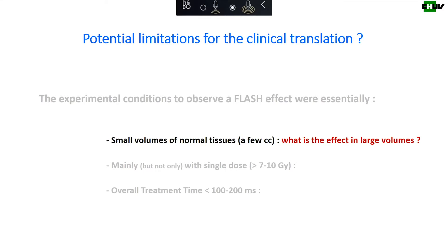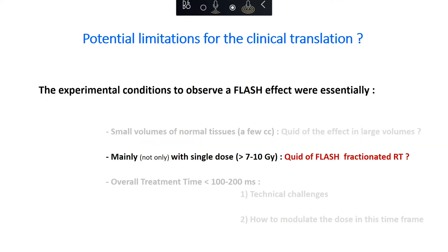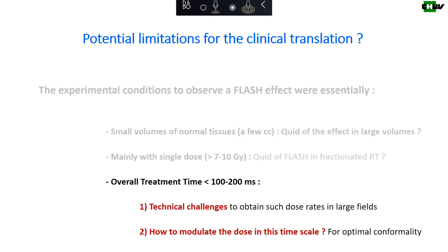Given these three types of limitations for clinical translation: first, what about the effect in large volumes of normal tissues? We don't know whether we'll see the same magnitude of sparing effect in large volumes. Second, the use of fractionation with flash needs to be explored, as there may be interesting interactions. Third, regarding overall treatment time, there are technical challenges, especially to obtain such dose rates in large fields and in deep-seated tumors.